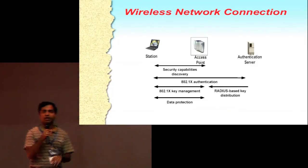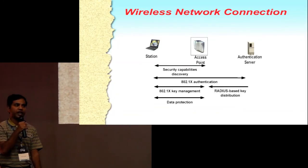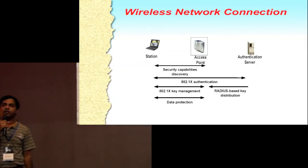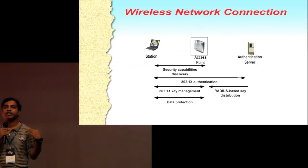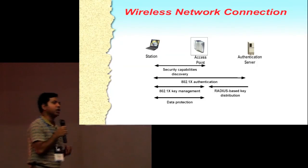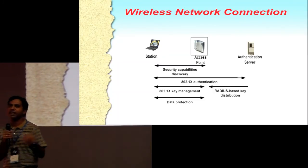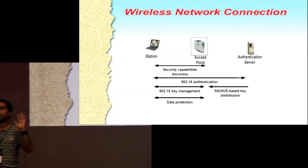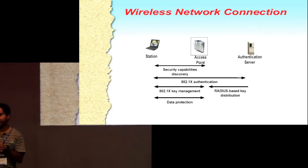In Wi-Fi terminology, these are called a station and AP — access point and station. In advanced Wi-Fi terms, there is something called an authentication server. In day-to-day use on a Wi-Fi mobile phone or Android phone, that kind of setup is not required. But if you are using a complex enterprise server setup, it is required. Let's see how this works in a Linux-based laptop, Android phone, or any other device.